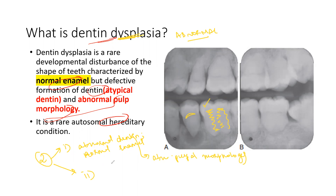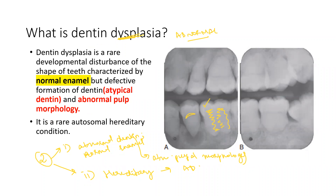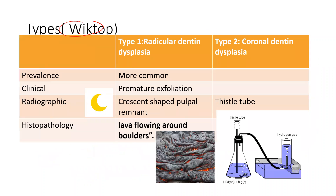The second point to note is that dentin dysplasia is autosomal dominant — it is a hereditary condition. So, to summarize: dentin dysplasia is characterized by abnormal dentin, normal enamel, and abnormal pulpal morphology. Coming to the types given by Wiktop, there are two types: radicular dentin dysplasia and coronal dentin dysplasia.